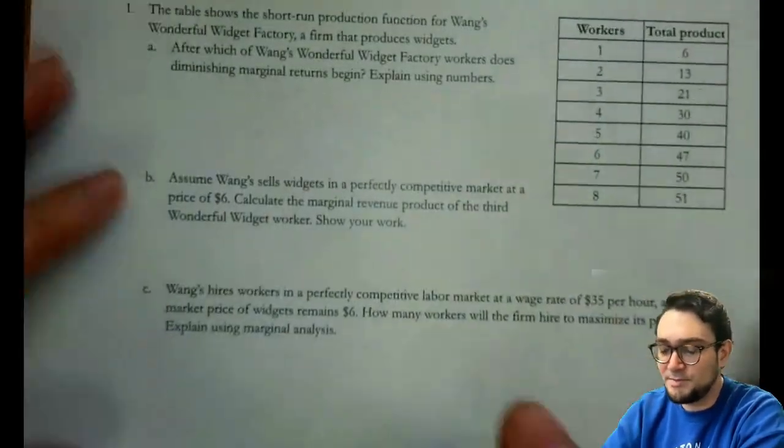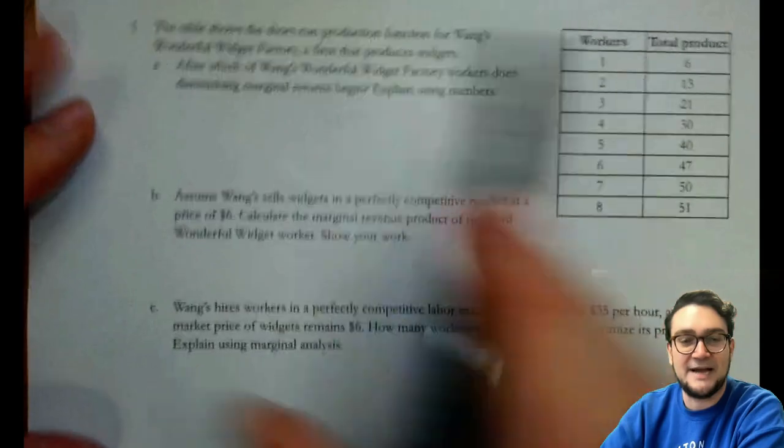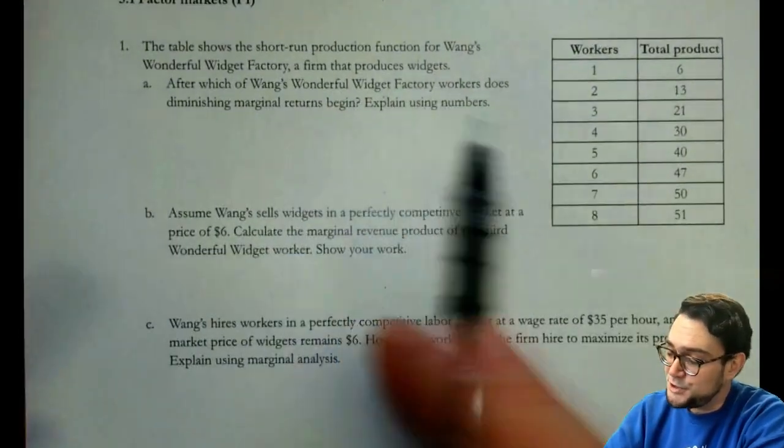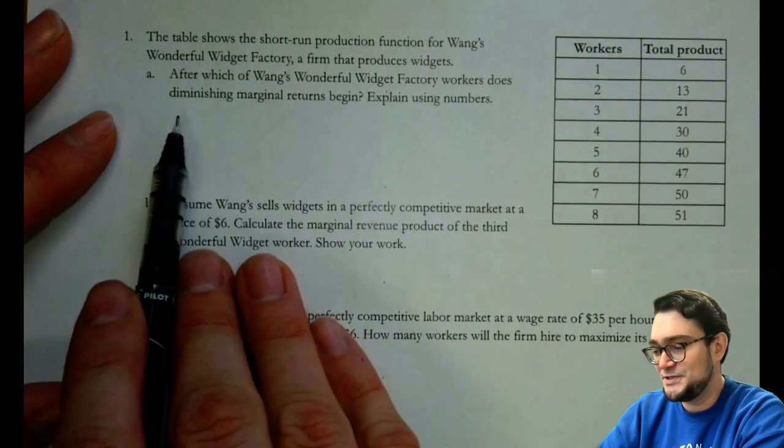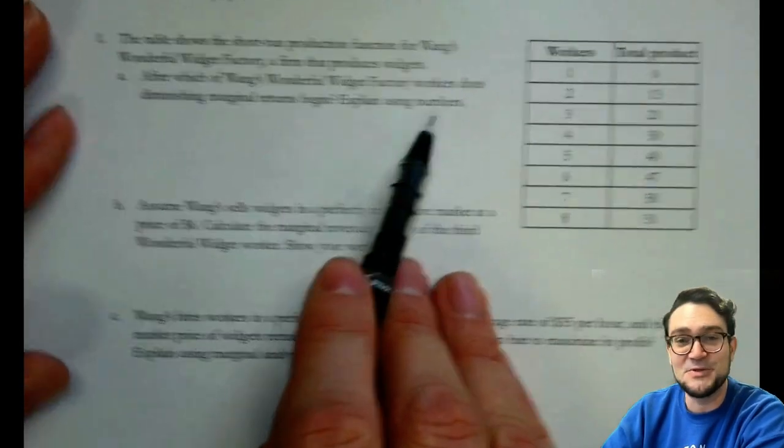So the first problem says, and it's all one problem, Wang's Wonderful Widget Factory, a firm that produces widgets. After which of Wang's Wonderful Widget Factory workers, boy, that's a mouthful, does diminishing marginal returns begin? Explain using numbers.